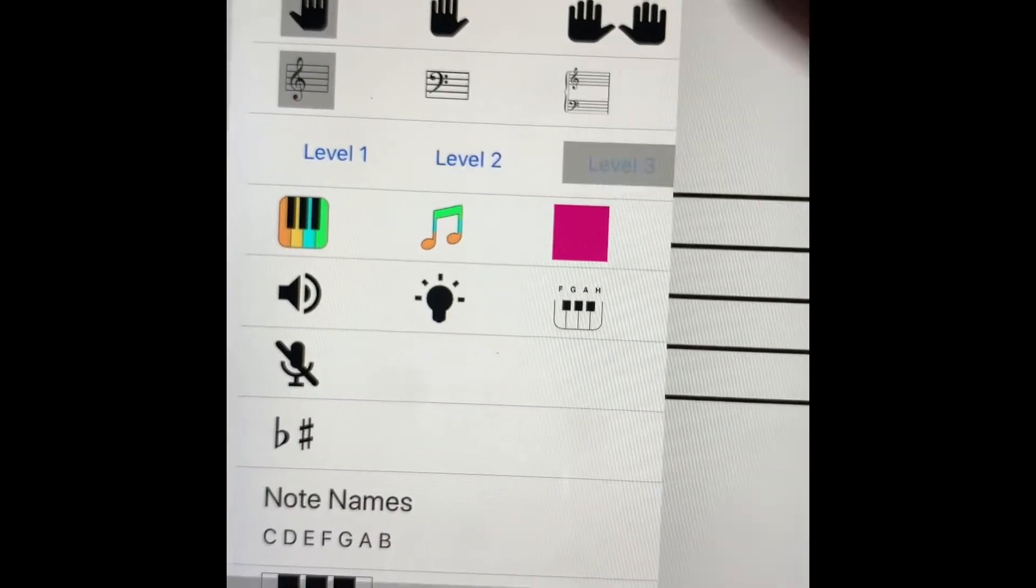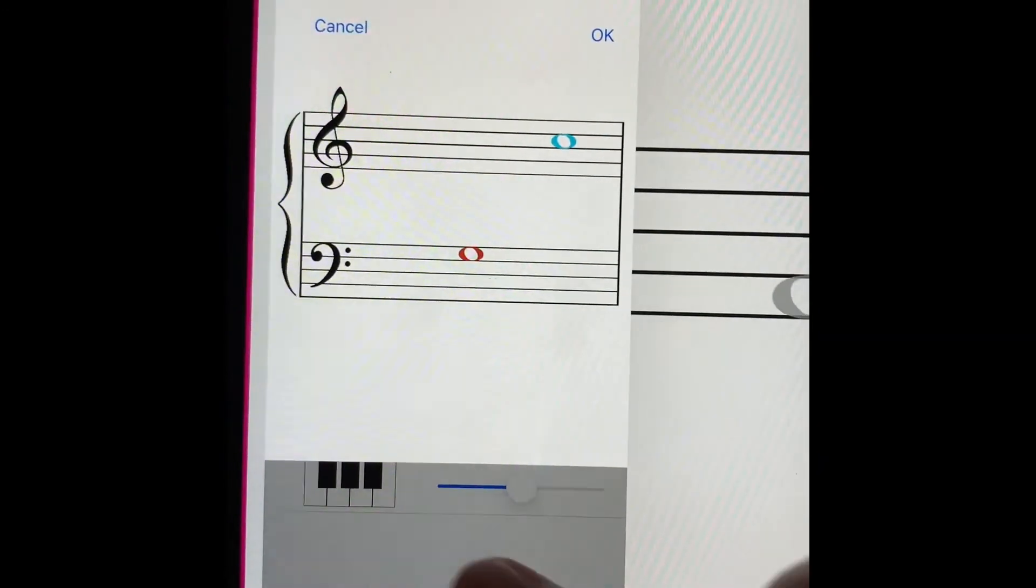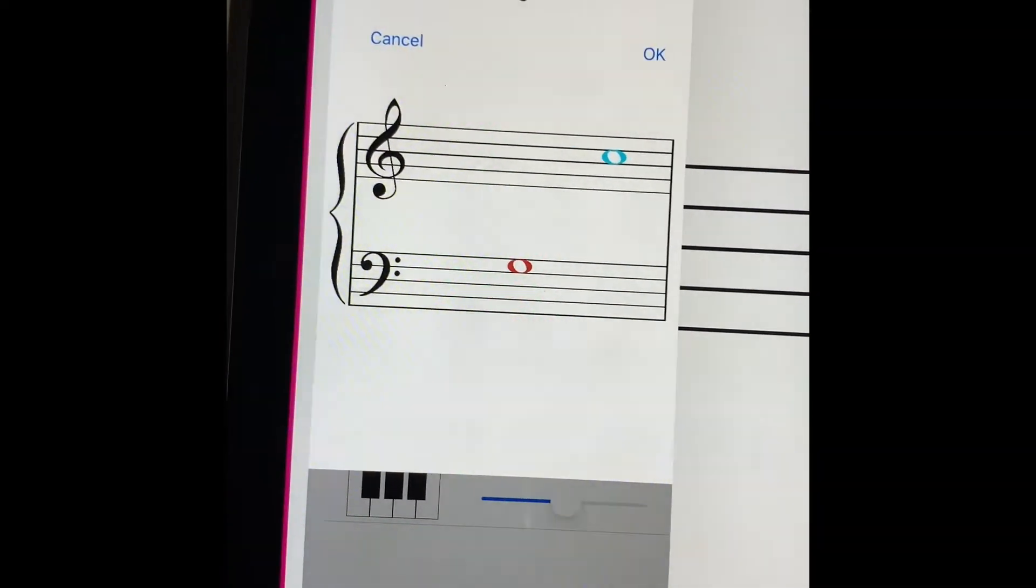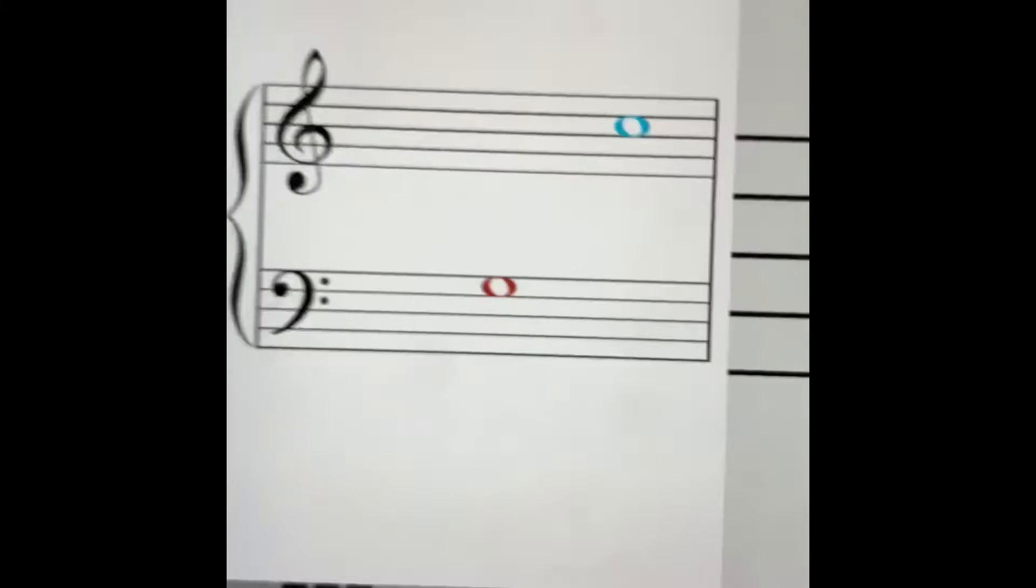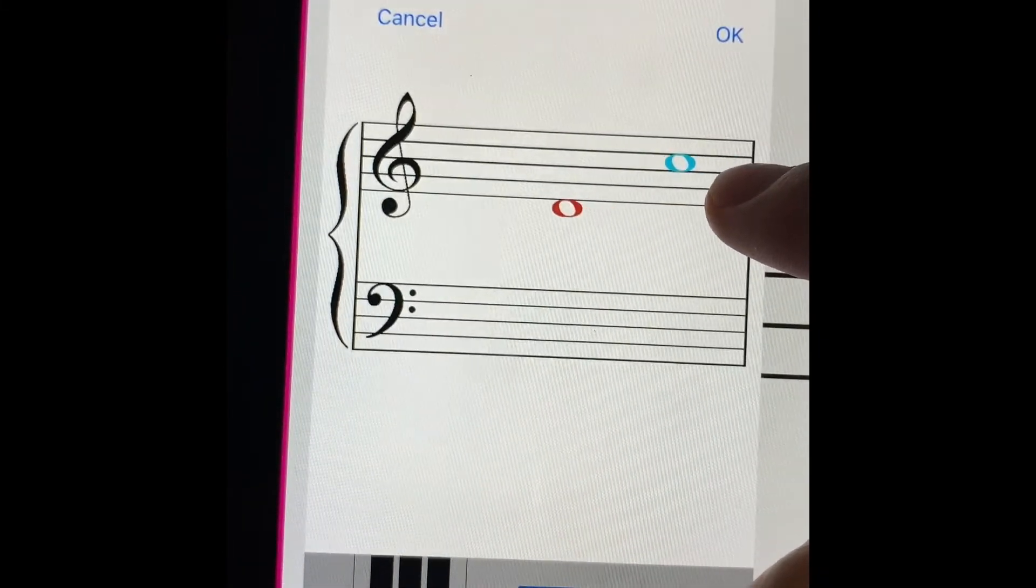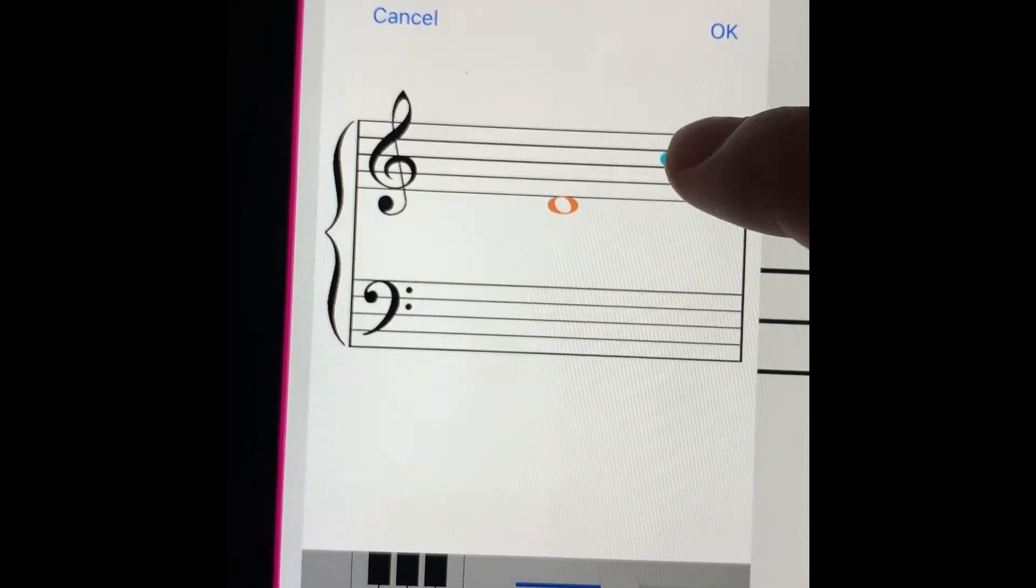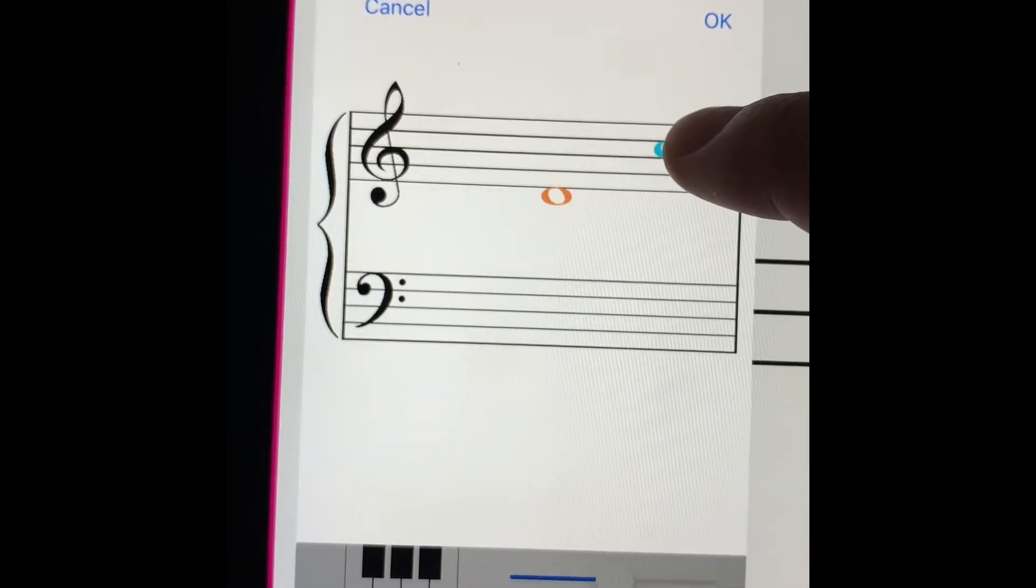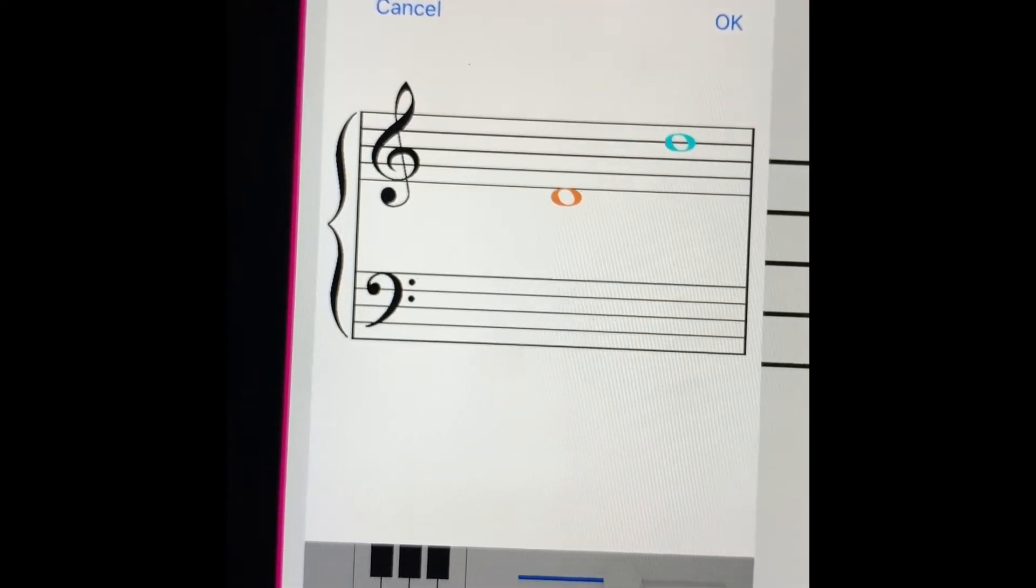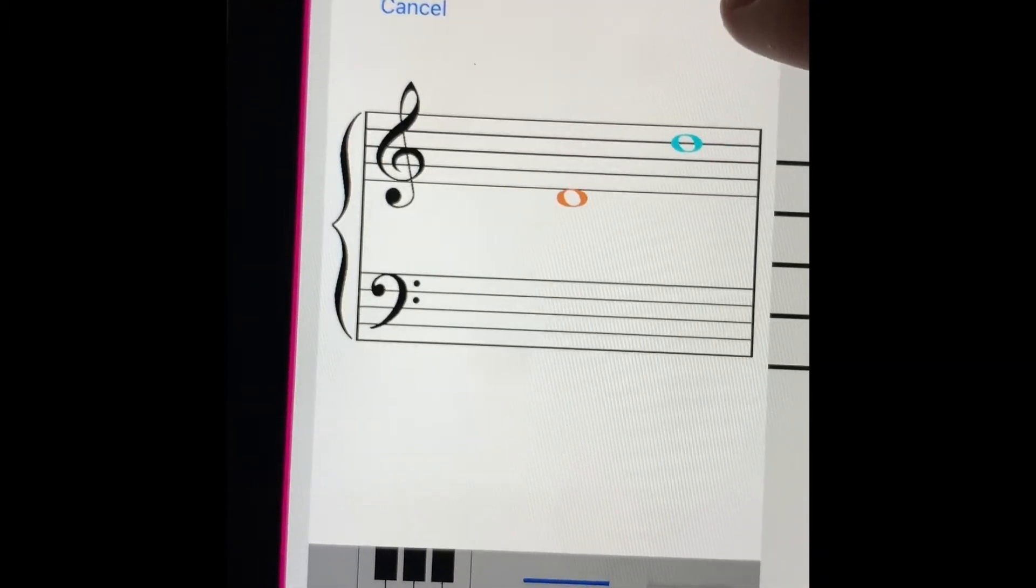Then level three is where you get to pick your range and that's a combination of all the lines and the spaces. For level three you're going to want to take this lowest note and drag it all the way up to right underneath the first line. You're going to then want to drag this one up to the third line. Well, not that one.